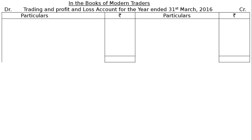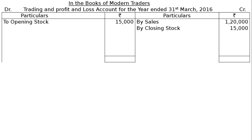After drawing the format of the trading account, we start with the credit side: by sales rupees 1,20,000 and by closing stock rupees 15,000. On the debit side, opening stock is rupees 15,000, followed by purchases rupees 82,000.